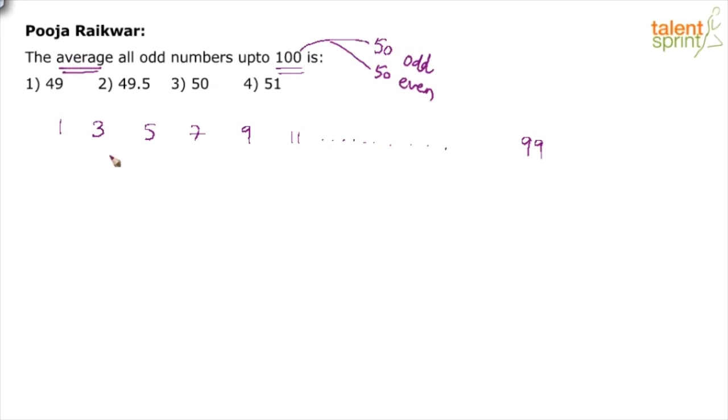We have discussed this in the case of consecutive numbers. For consecutive numbers, you very well know this - the average is the middle number.